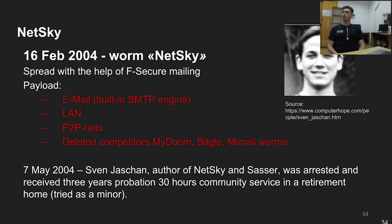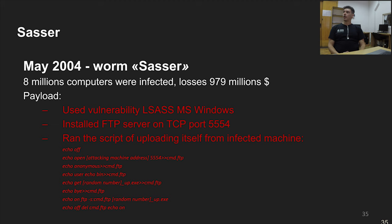In May 2004, the author of NetSky, Sven Jaschan, was arrested. He was also responsible for another worm, Sasser. In that attack, 8 million computers were infected — similar to LoveSan — with total losses calculated at almost $1 billion. The Sasser worm installed an FTP server on port 5554, a non-standard port for FTP (which typically uses port 21), and ran a script that uploaded a copy of the worm to other computers on local networks using the FTP protocol.